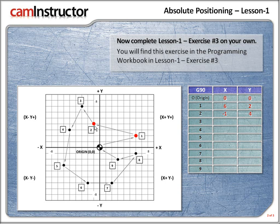So for position 2, x is minus 1 and y is plus 4. Next up, position 3. The x-value for 3 is going to be negative. How much? 1, 2, 3. So for position 3, x is negative 3. Now the y is going to be a positive value. Let's count the squares up: 1, 2, 3, 4, 5, 6, 7. So for position 3, we have x minus 3 and y positive 7.